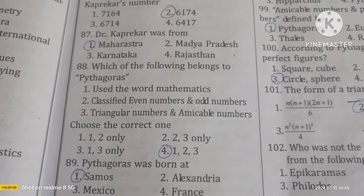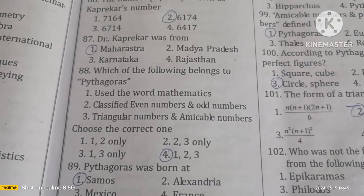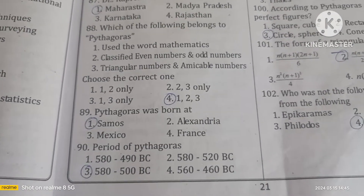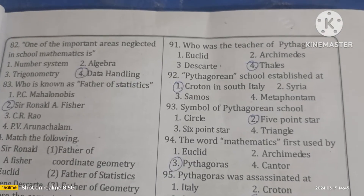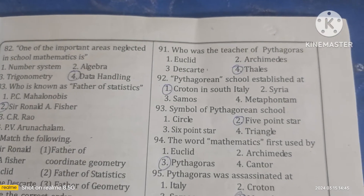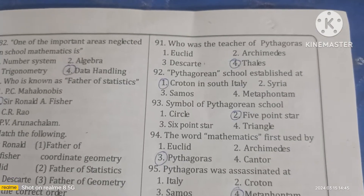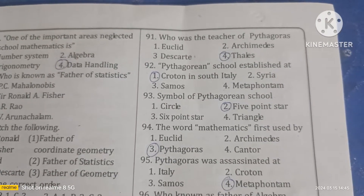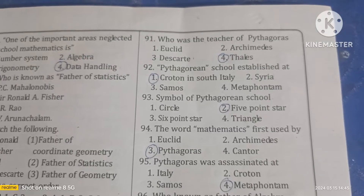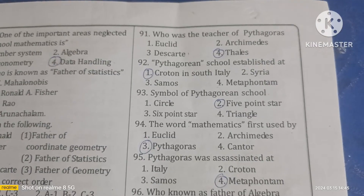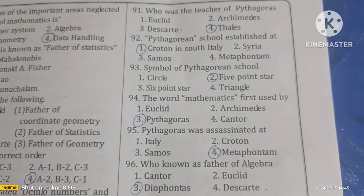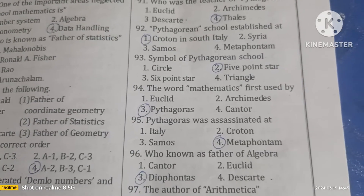Pythagoras first used the word 'mathematics.' He classified even and odd numbers, triangular numbers, and amicable numbers. Pythagoras was born at Samos, with a period of 580–500 BC. His teacher was Thales. The Pythagorean school was established at Croton in South Italy, and its symbol was a five-pointed star. Pythagoras was assassinated at Metapontum.